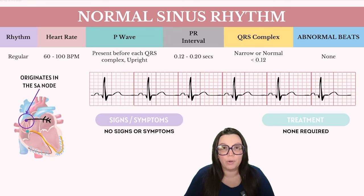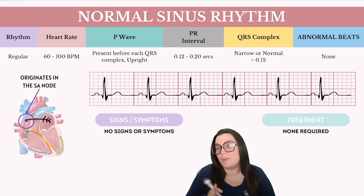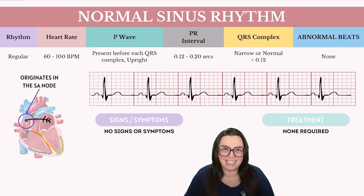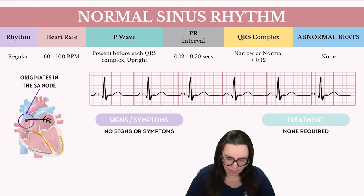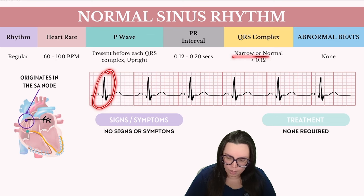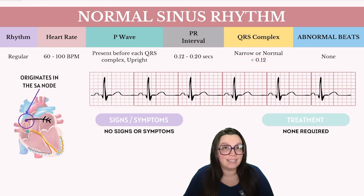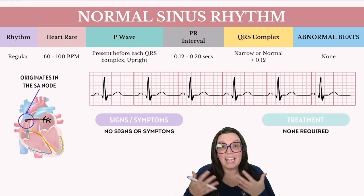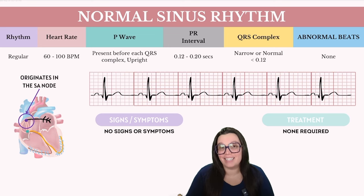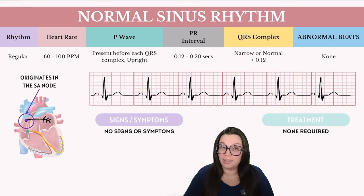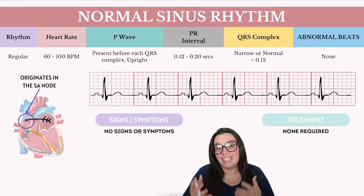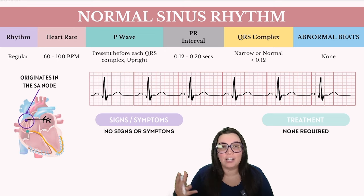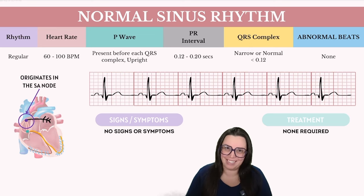Our PR interval should be normal, ranging anywhere from 0.12 to 0.20 seconds, which corresponds to the width of about three to five small boxes. Additionally, our QRS complex needs to be narrow and normal, which means it needs to be less than 0.12 seconds. If our QRS complex does exceed the width of three small boxes, then we call our QRS complex big, wide, and ugly.